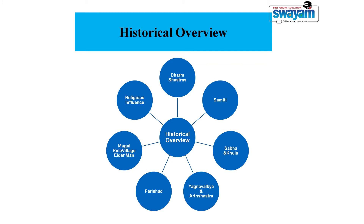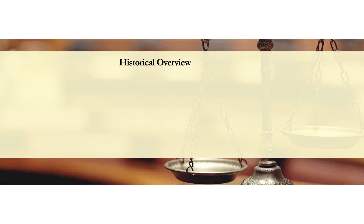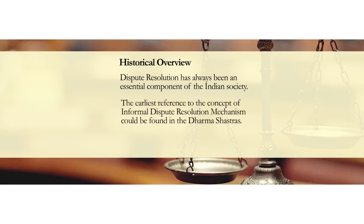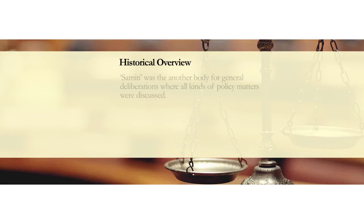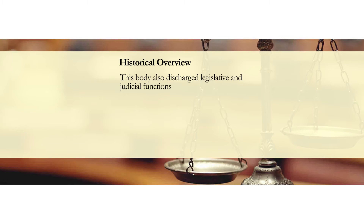To start with, we will try to understand the historical overview of the informal access to justice system in India. Dispute resolution has always been an essential component of Indian society. The earliest reference to informal dispute resolution mechanism could be found in Dharam Shastra, which dealt with non-adversarial indigenous methods. Samithi was another body of general deliberations where all kinds of policy matters were discussed, and it also discharged legislative and judicial functions.